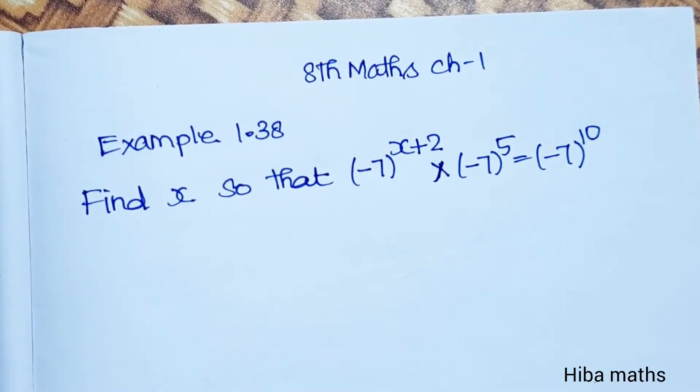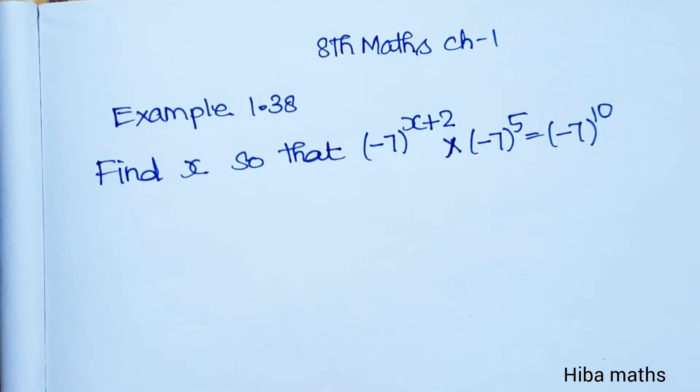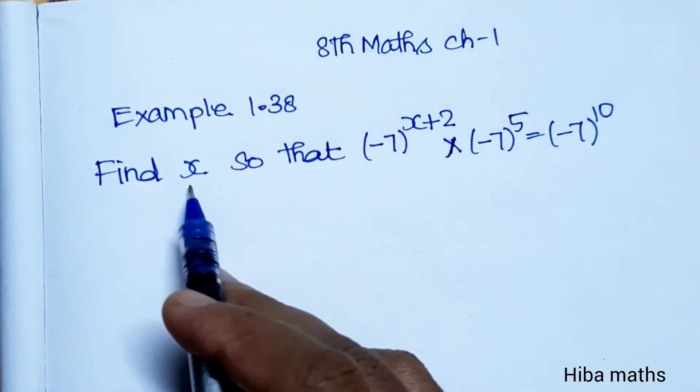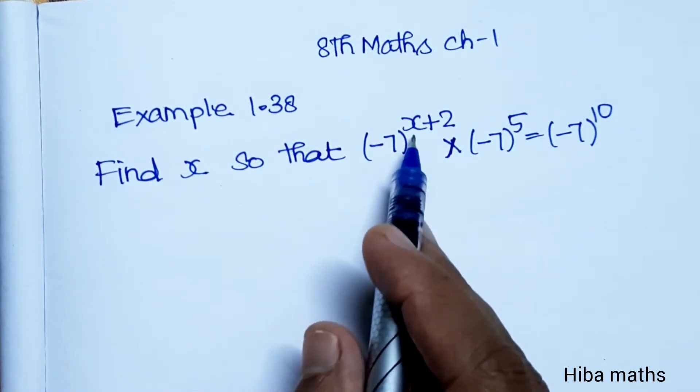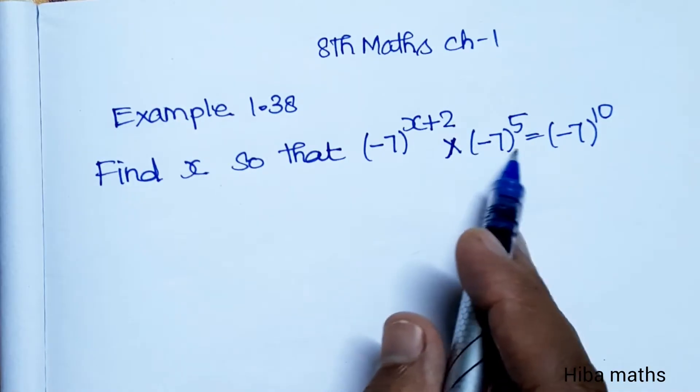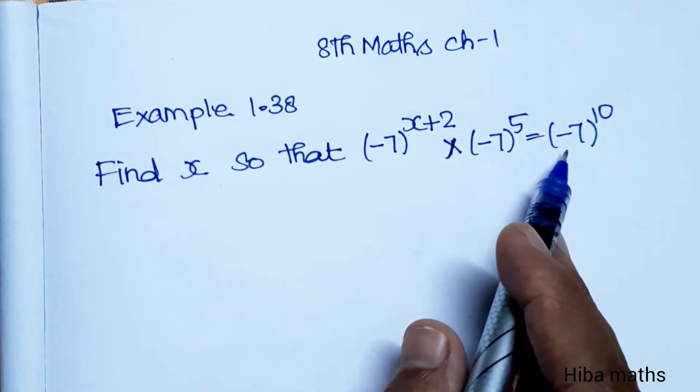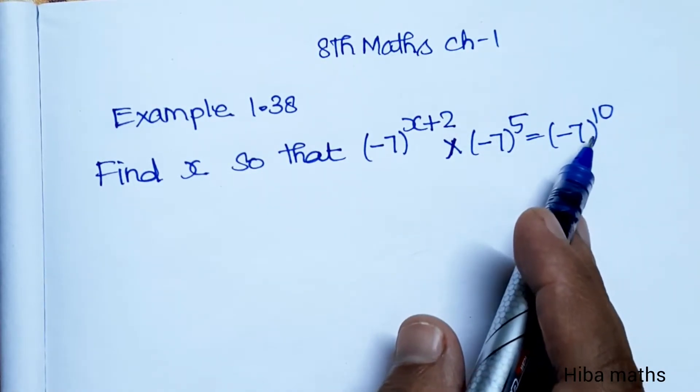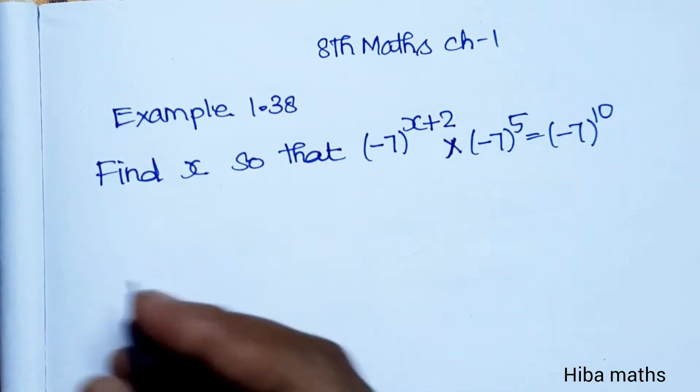Hello students, welcome to Hiba Maths. 8th Standard Maths Chapter 1, Example 1.38. Find x so that (-7)^(x+2) × (-7)^5 = (-7)^10. The x value is equal to...